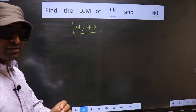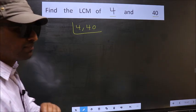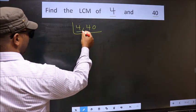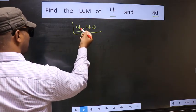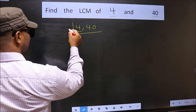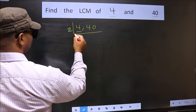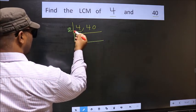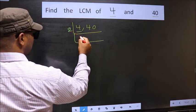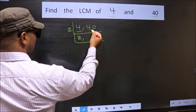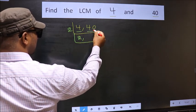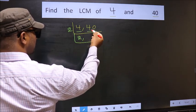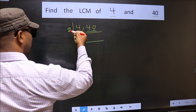Now you should focus on the first number, that is 4. 4 is even, so we take 2. When do we get 4 in the 2 table? 2 times 2 is 4. Now the other number — last digit is 0, so this number is also divisible by 2.